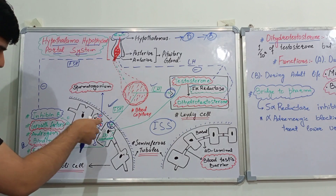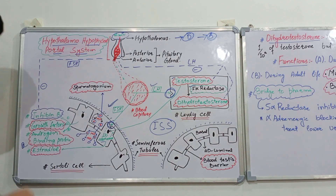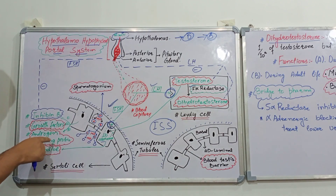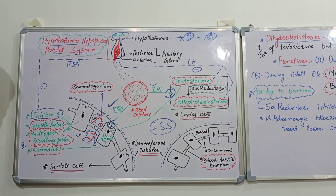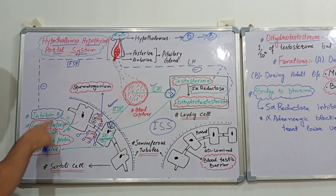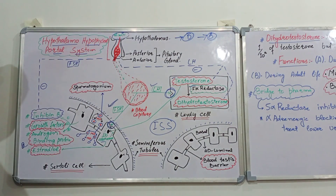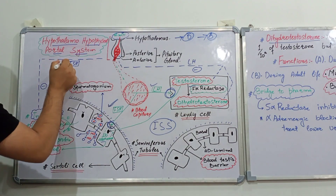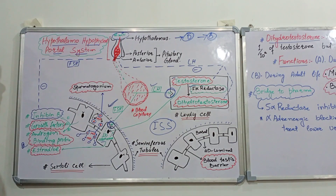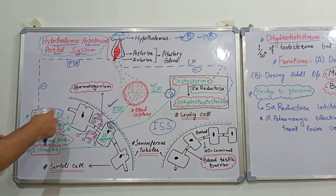The hormones secreted by Sertoli cells are: growth factors, androgen-binding protein, estradiol, and inhibin B. Inhibin B sends a negative feedback to the anterior pituitary and causes inhibition of the secretion of follicle-stimulating hormone.